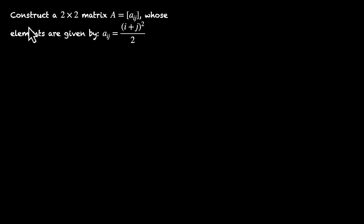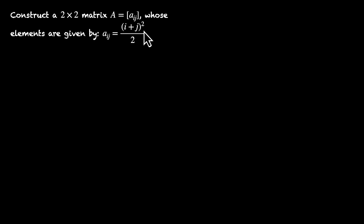In this video, we'll learn how to construct matrices from their elements. Here's a problem: construct a 2x2 matrix A whose elements are given by Aij equals (i plus j) squared divided by 2.